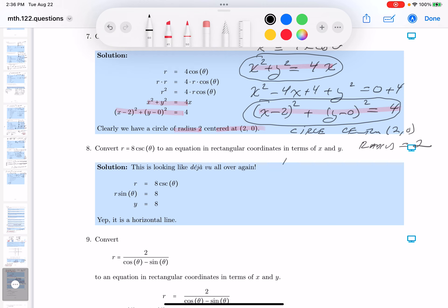So really, I'm looking at r = 8 over sine theta. Now, I don't like to look at the fraction either, so I'm going to multiply both sides by sine theta.